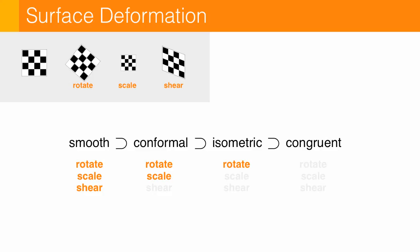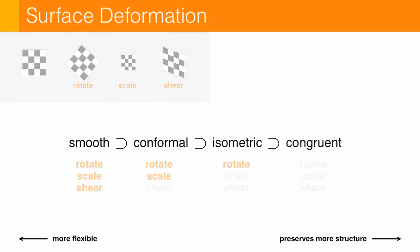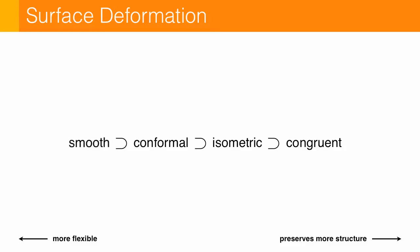And so as we move from the left to the right on this picture, we go from having a lot of flexibility with the geometry to preserving a lot of the structure of the surface. And so for a given application, we have to ask, what's most important to us? For instance, in these examples we looked at a minute ago, we saw that smooth deformations are sort of too flexible, they distort our features like our texture, our mesh.